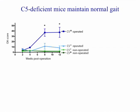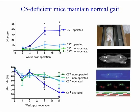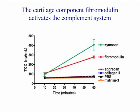Here's a time course with severity of osteoarthritis on the y-axis. Wild-type mice develop severe osteoarthritis, while complement-deficient mice are protected. We also performed functional gait analysis using a catwalk that is videoed and analyzed for gait patterns. Wild-type mice that develop osteoarthritis show progressive gait disturbance, whereas complement-deficient mice maintained a normal gait pattern consistent with healthy mice. Finally, we show that the cartilage component fibromodulin — which may be exposed and released when cartilage breaks down — directly activates the complement system, whereas other cartilage components tested did not.